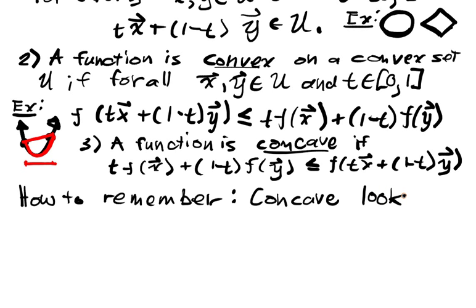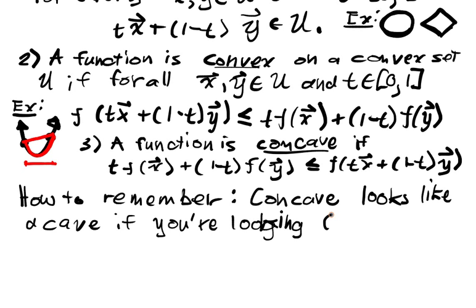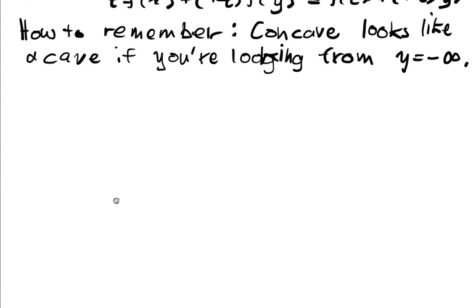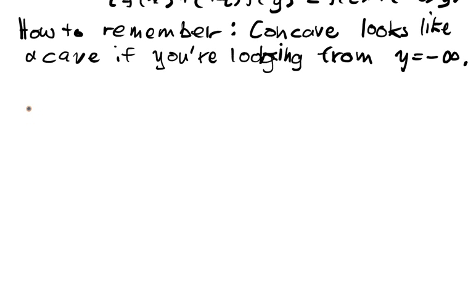Well, concave looks like a cave if you're staring from, if you're looking from y is equal to negative infinity. Right? So if I'm down here somewhere and I look, then concave will look like a cave and convex is going to look like a convex lens or the opposite of concave. So that's maybe a helpful device for remembering it. And once you have the picture, the inequality should be pretty clear.